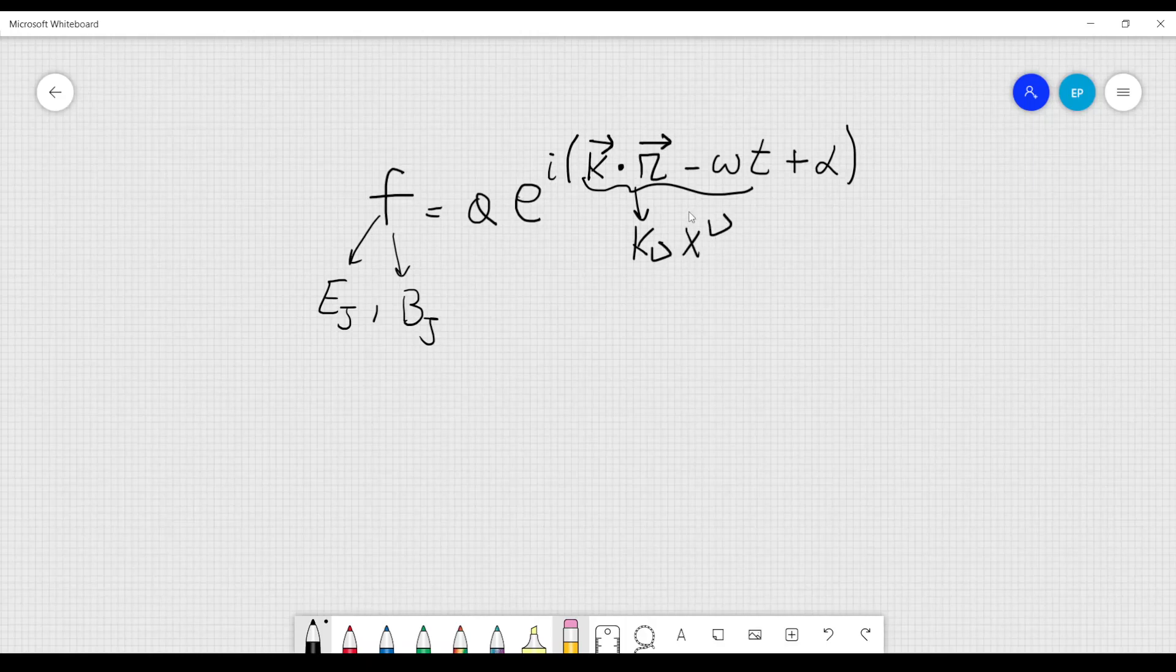In geometrical optics, we generalize this expression here, which is related to monochromatic waves like this. We consider f to be equal to some function a. In this case, a is not a constant anymore. It will be a function of the position, the position vector r, and time t.